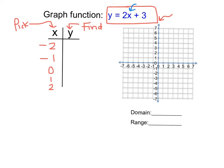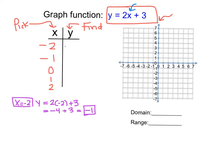I'm going to do my work down here at the bottom of the page, starting with x equals negative 2. When x equals negative 2, we have y equals 2 times negative 2 plus 3, which is negative 4 plus 3, which is negative 1. So when x is negative 2, the y value paired with it is negative 1. We go to our graph, plot x is negative 2, y is negative 1.